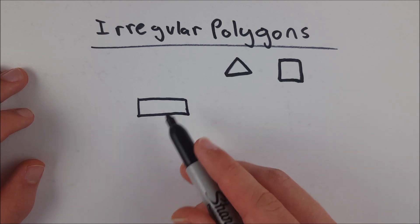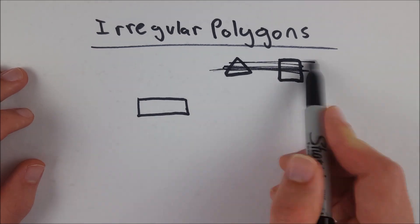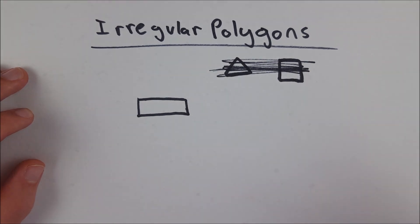Therefore, this is irregular. I'm just going to cross these out so that we know these are not in the category of irregular polygons.